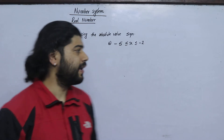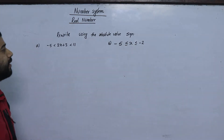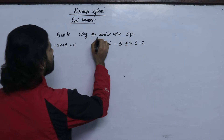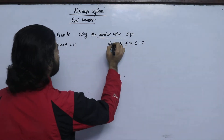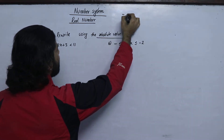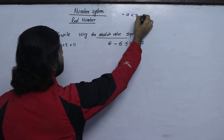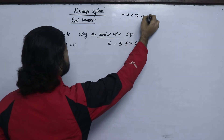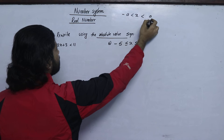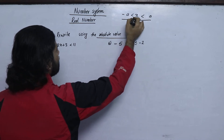We can rewrite using absolute value sign. What do we do? We will write the number one — the plus a — just above a negative number, not above a positive number. Double the negative number.